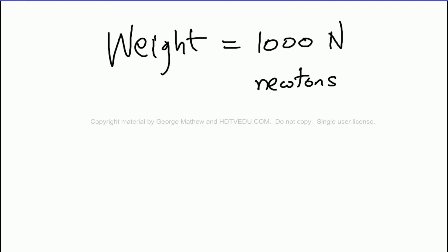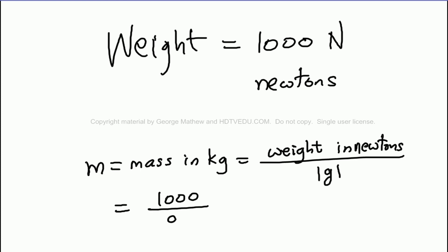If weight is 1000 newtons, what is mass? Mass is weight in newtons divided by acceleration due to gravity. So what do we get? 1000 divided by 9.8 equals 102 kg.